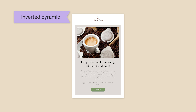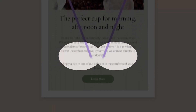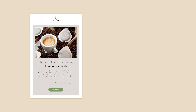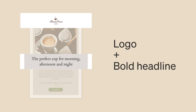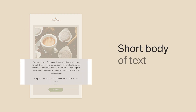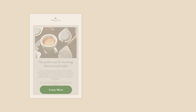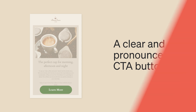First, we have the inverted pyramid email. It's like a triangle that points you straight to the action. At the very top, you'll find a captivating full-width image or logo paired with a bold headline. Below that is a short body of text that provides a little more detail about your product, leading you to the main attraction — a clear and pronounced CTA button.